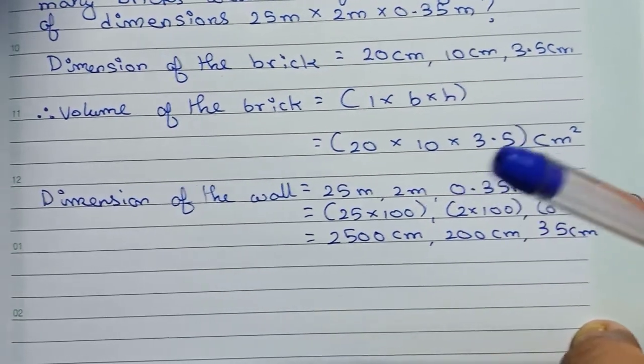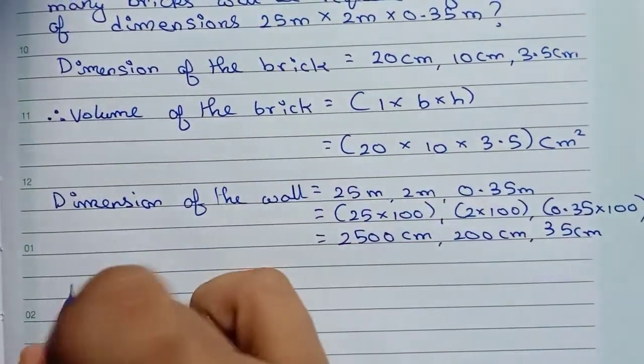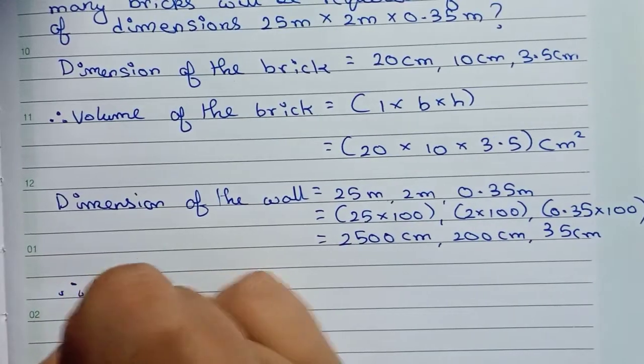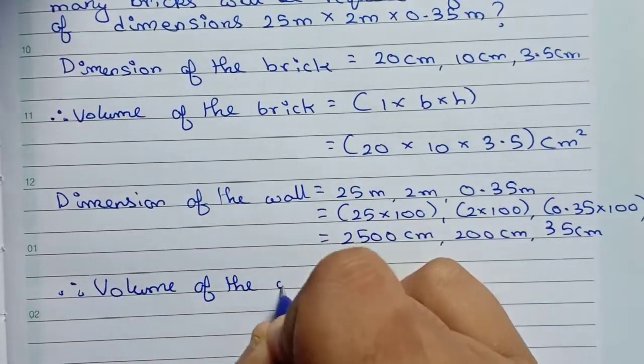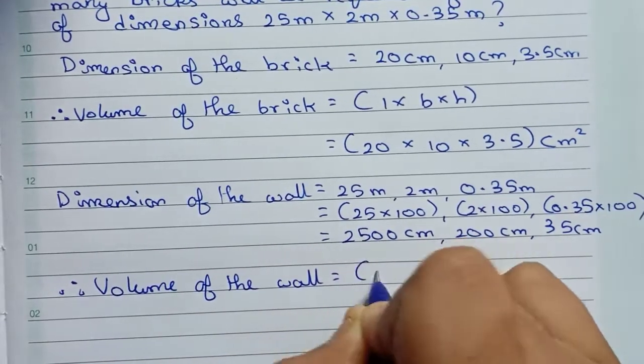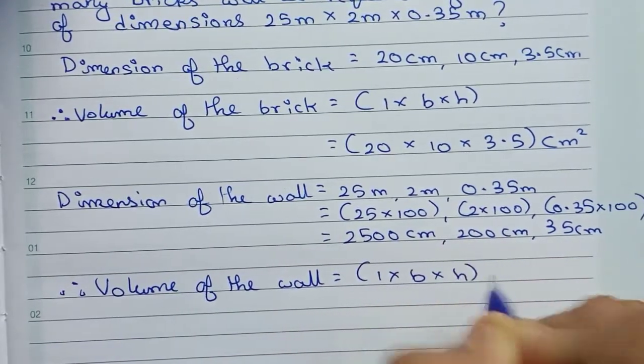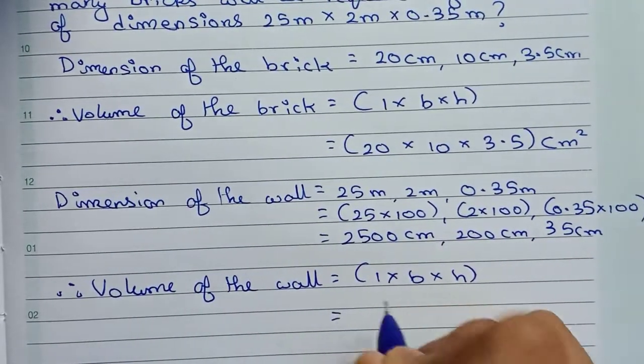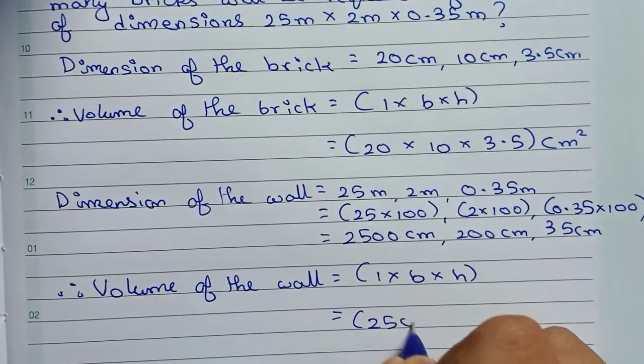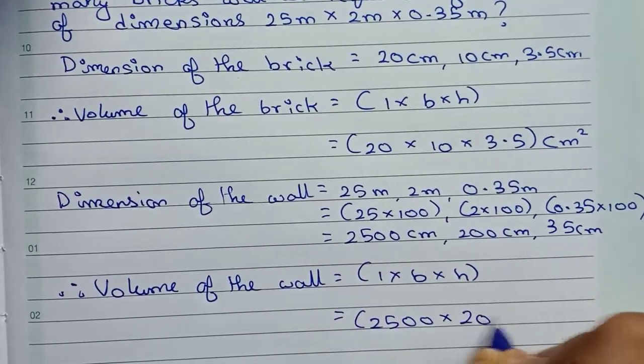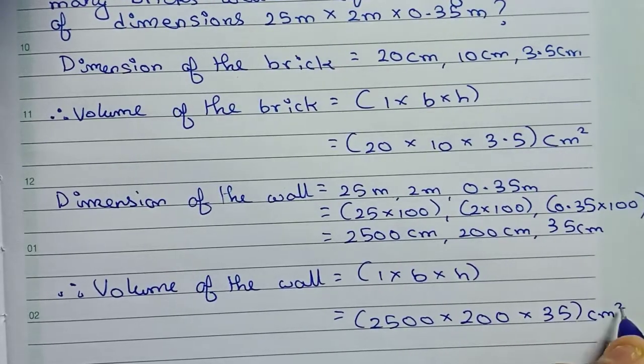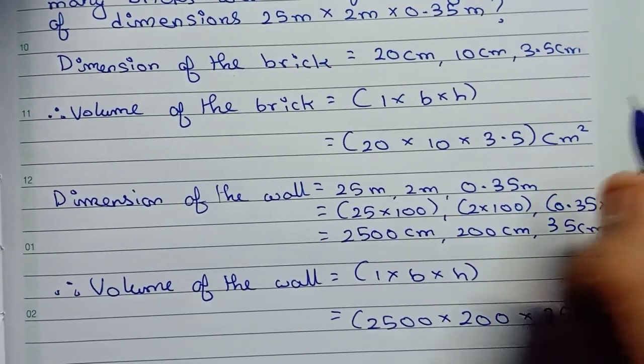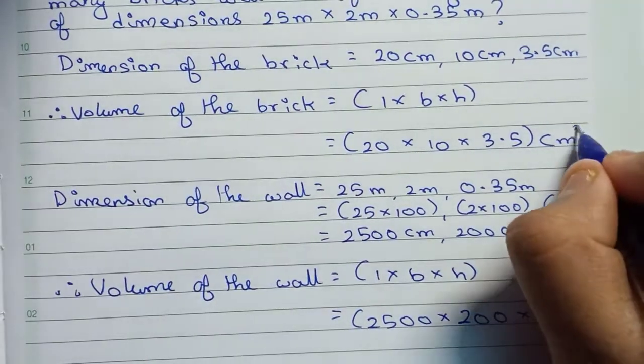Now you write: Volume of the wall equals to length × breadth × height, which equals 2500 × 200 × 35 cm³. And here also it will be cm³.